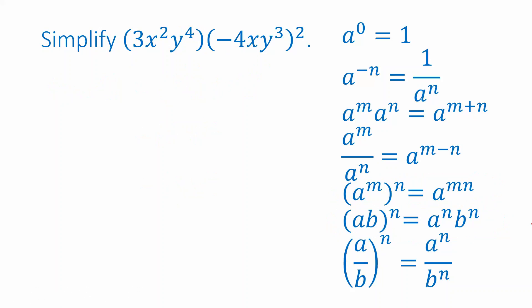Let's look at another example. This one looks a little bit more complicated, but we're going to follow the same general idea — we're going to use the list of properties on the right column to help us simplify. First of all, I have 3x squared y to the fourth multiplied by an expression that's raised to an exponent of 2.